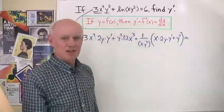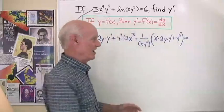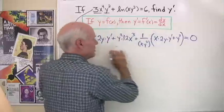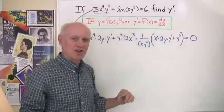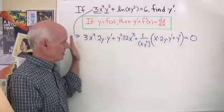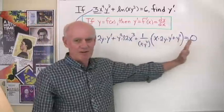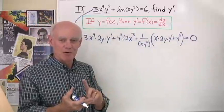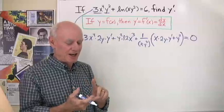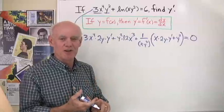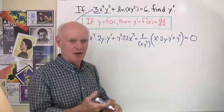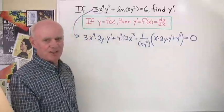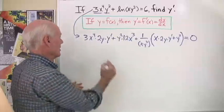The derivative of 6 with respect to x is 0. So that's my derivative when I differentiate implicitly, going left to right. I run across the product rule, the chain rule, and the rule for differentiating a natural logarithm. Now the rest is all simplification — let's see what we can do.